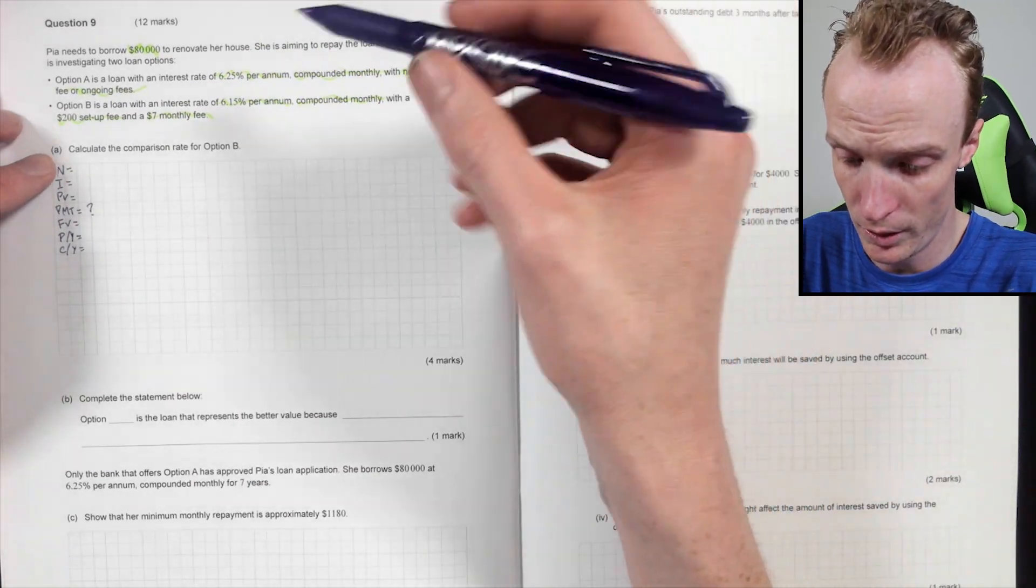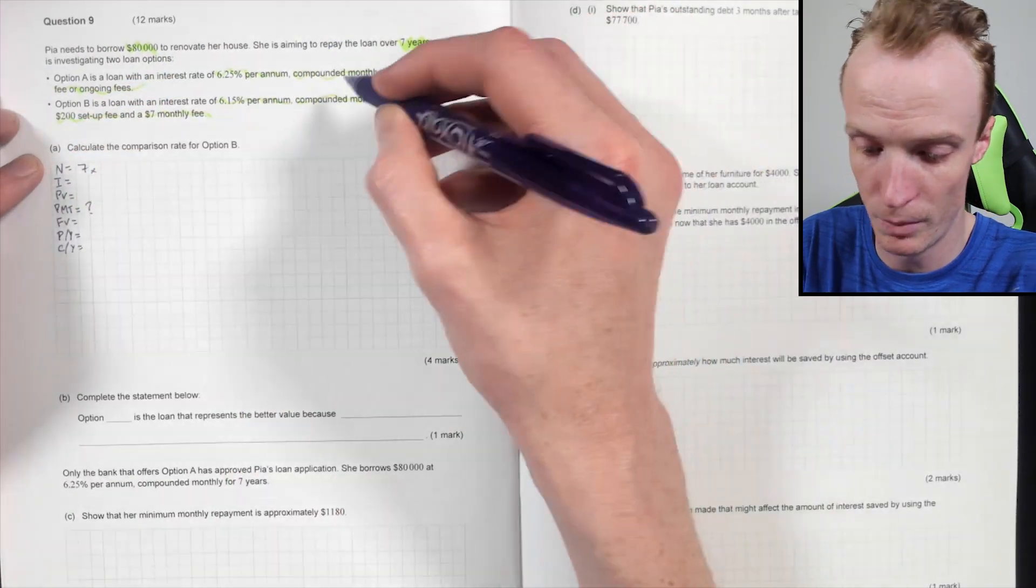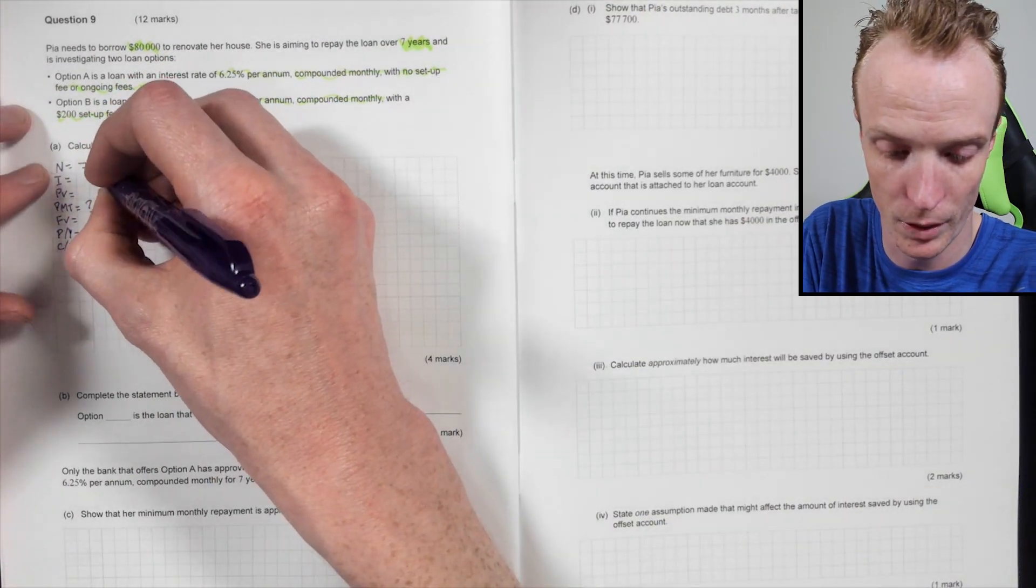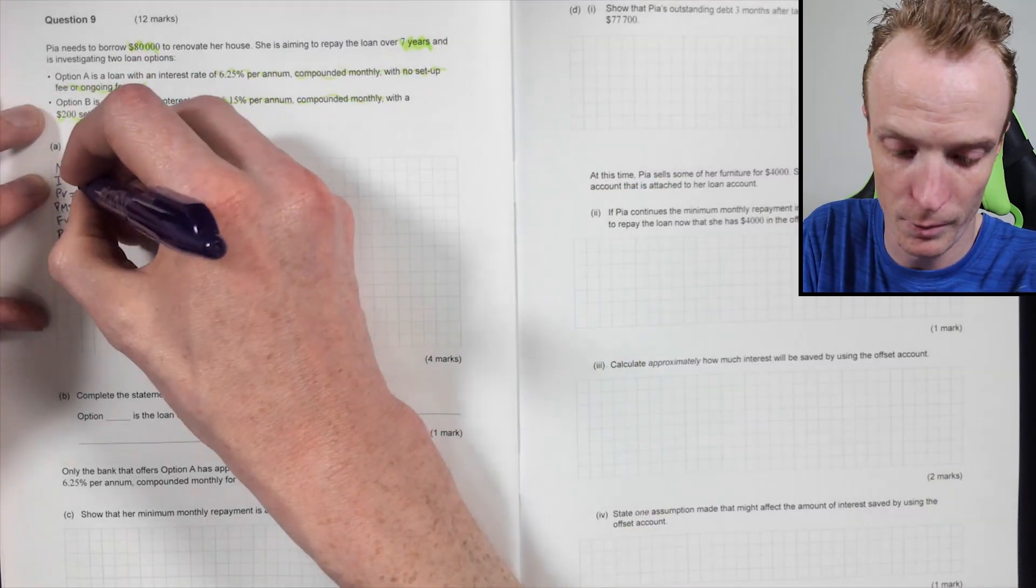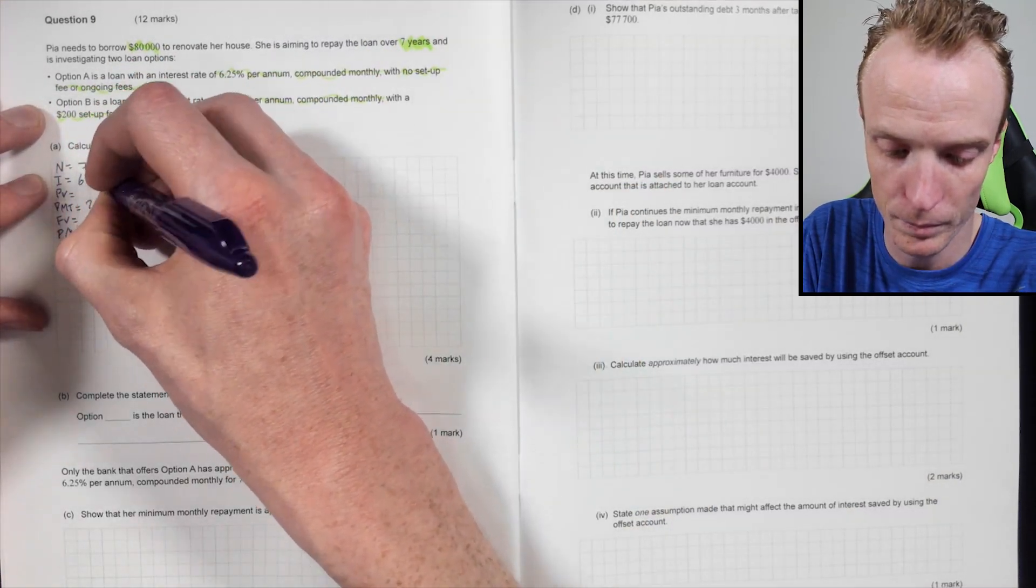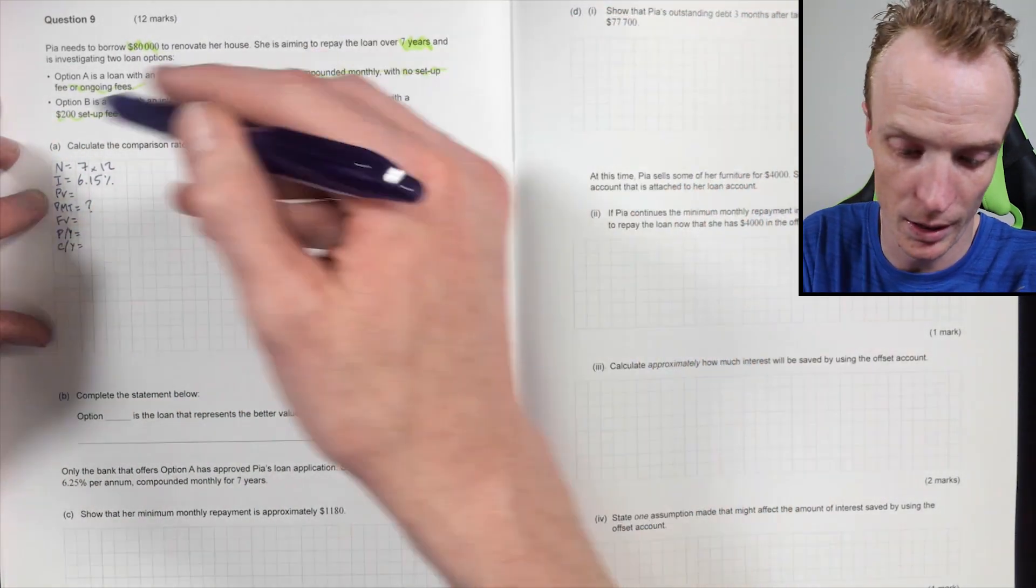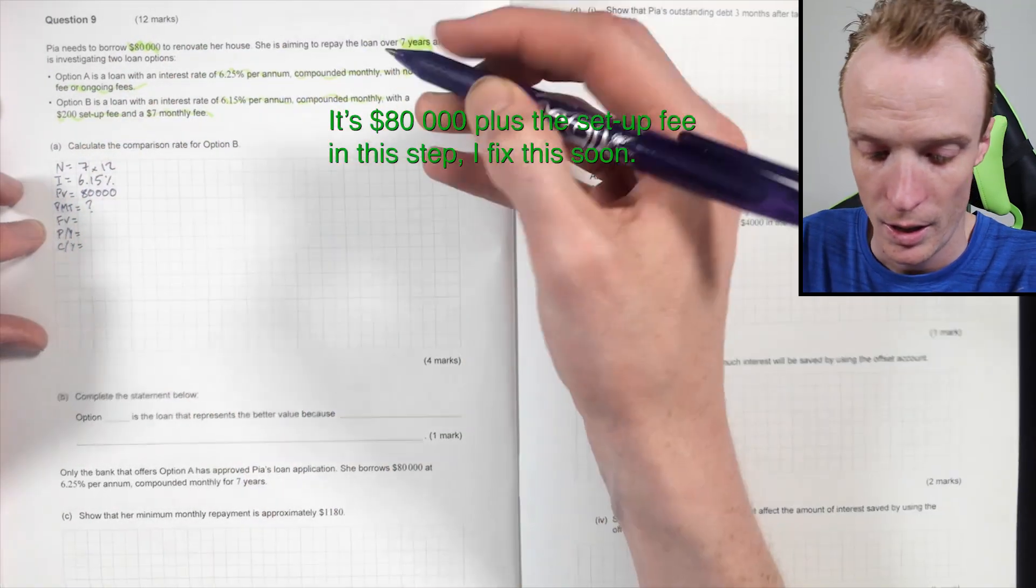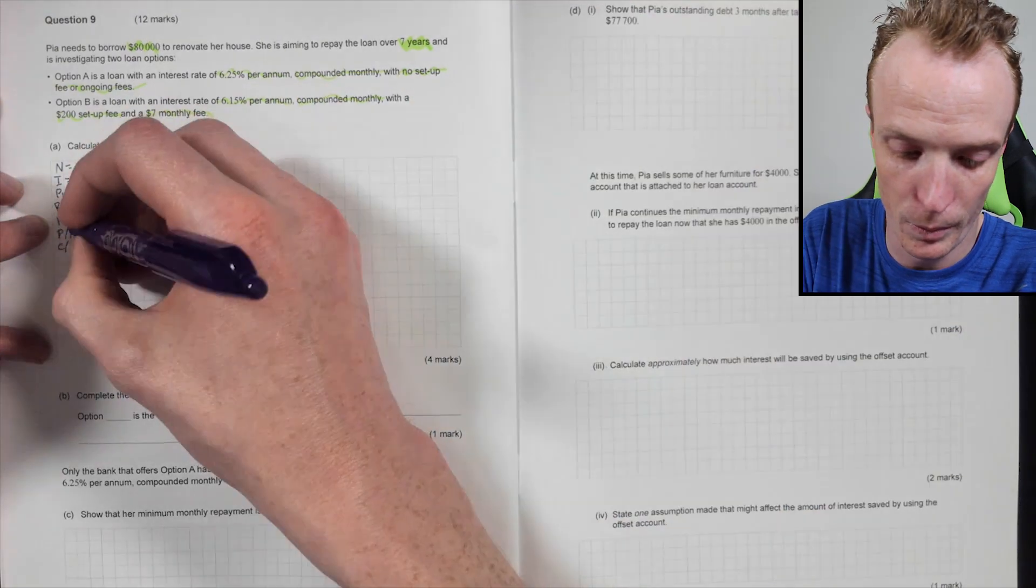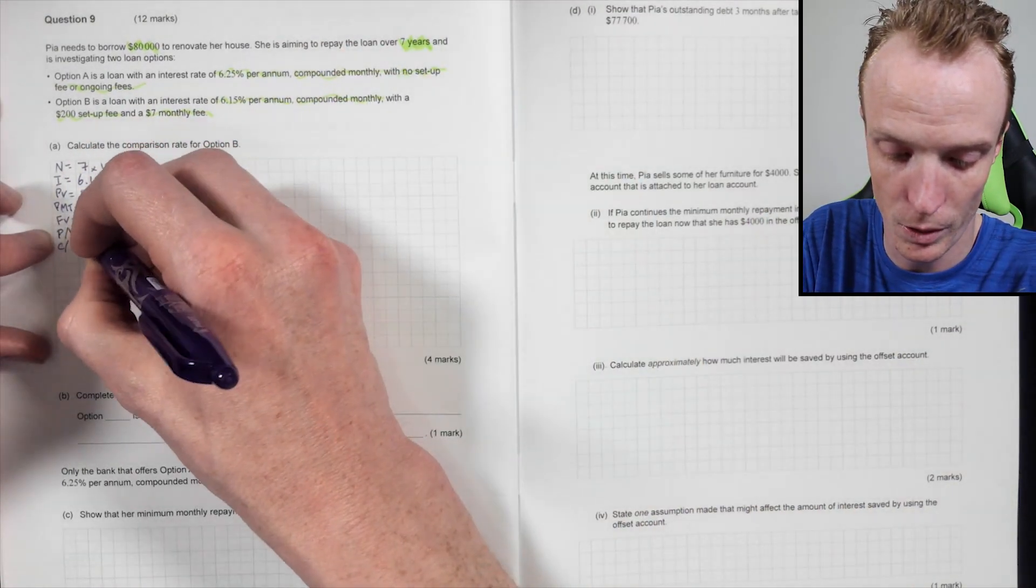Now the N is going to be, it's a seven-year loan. So seven multiplied by, and it's compounding monthly. So seven by 12. The interest rate, we're doing B, aren't we? So 6.15%. The present value is 80,000. Now this is a loan, isn't it? Yep. So 80,000. So I'm taking that out. That'll be positive. The future value, well, we're wanting to repay it. So it'll be zero. The PY, well, that'll be 12 and 12.